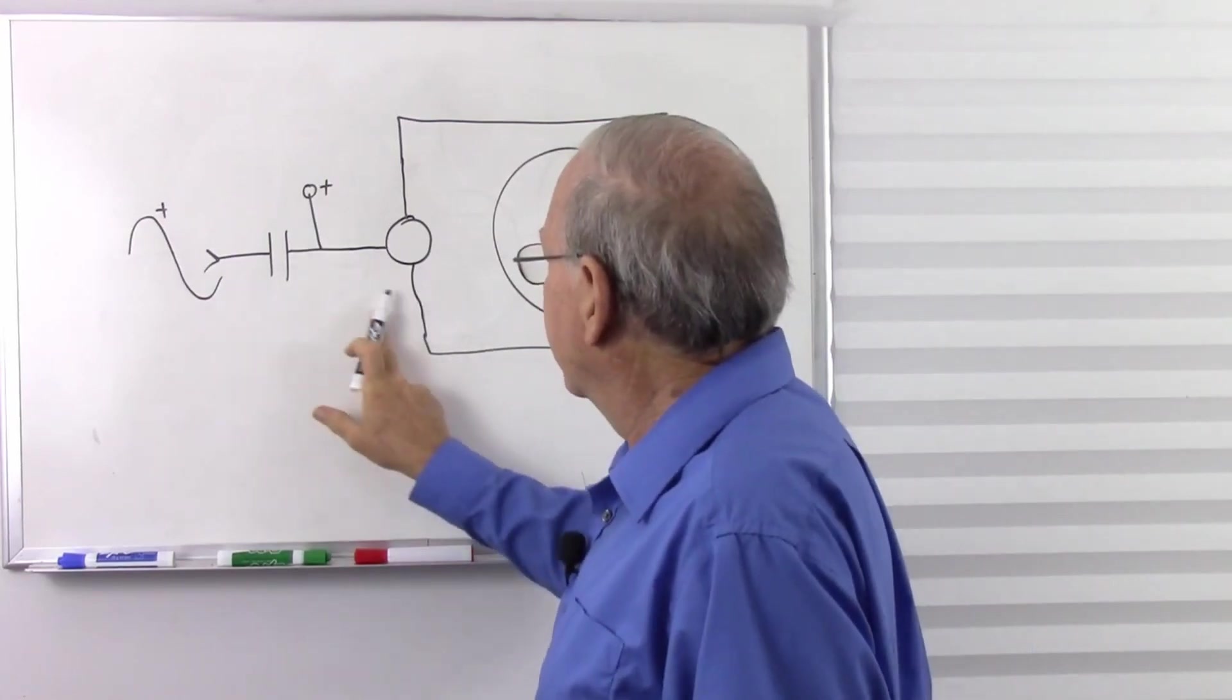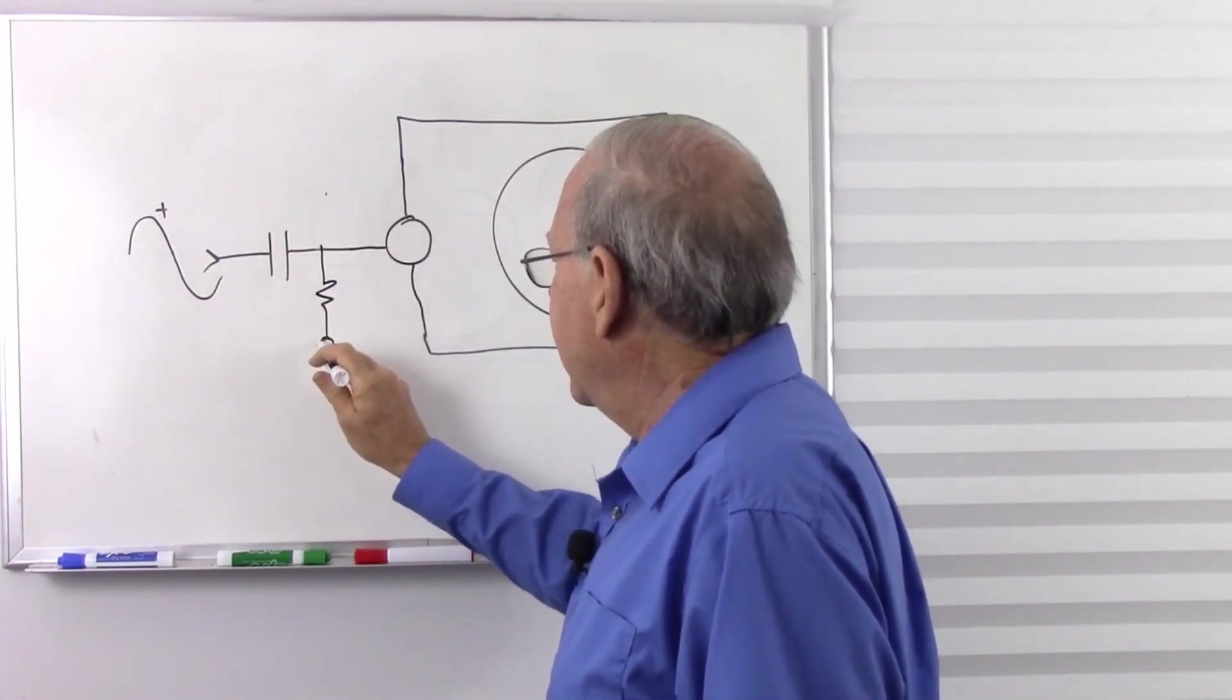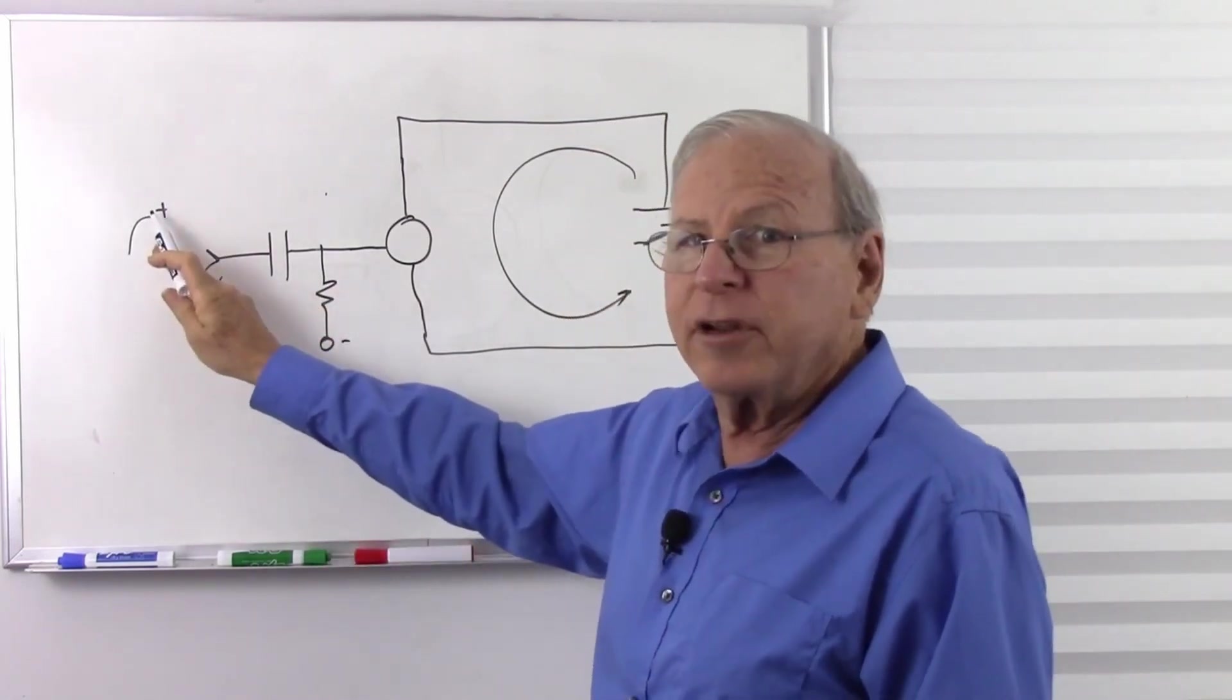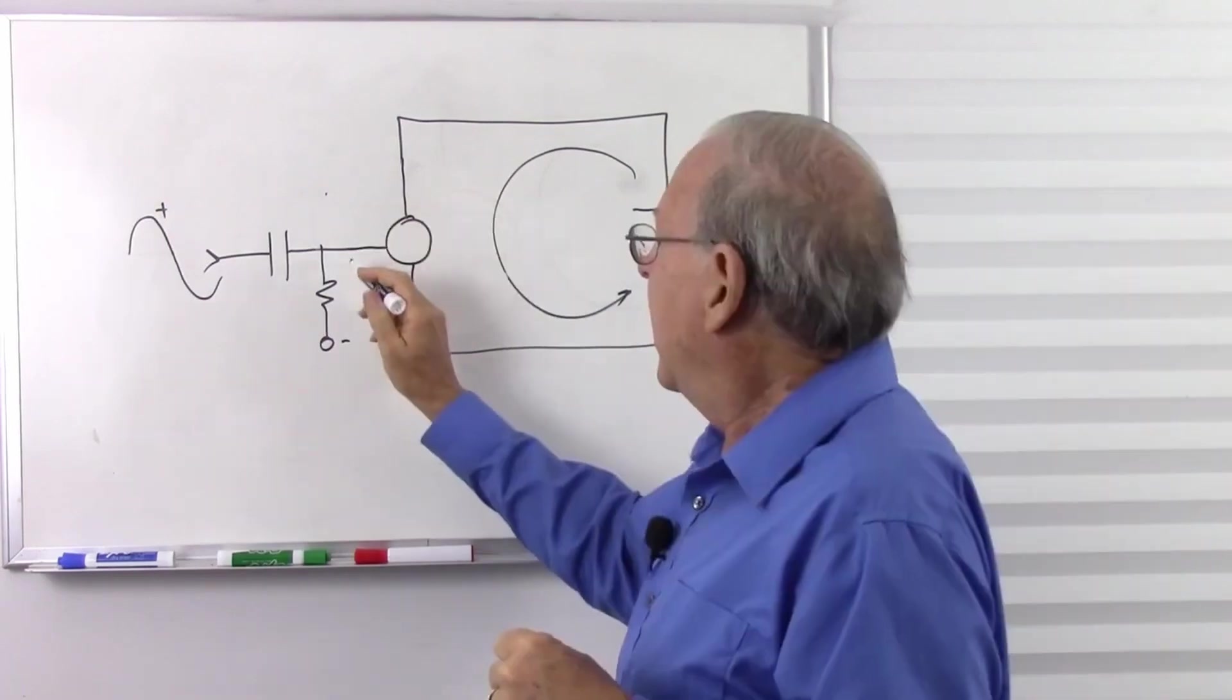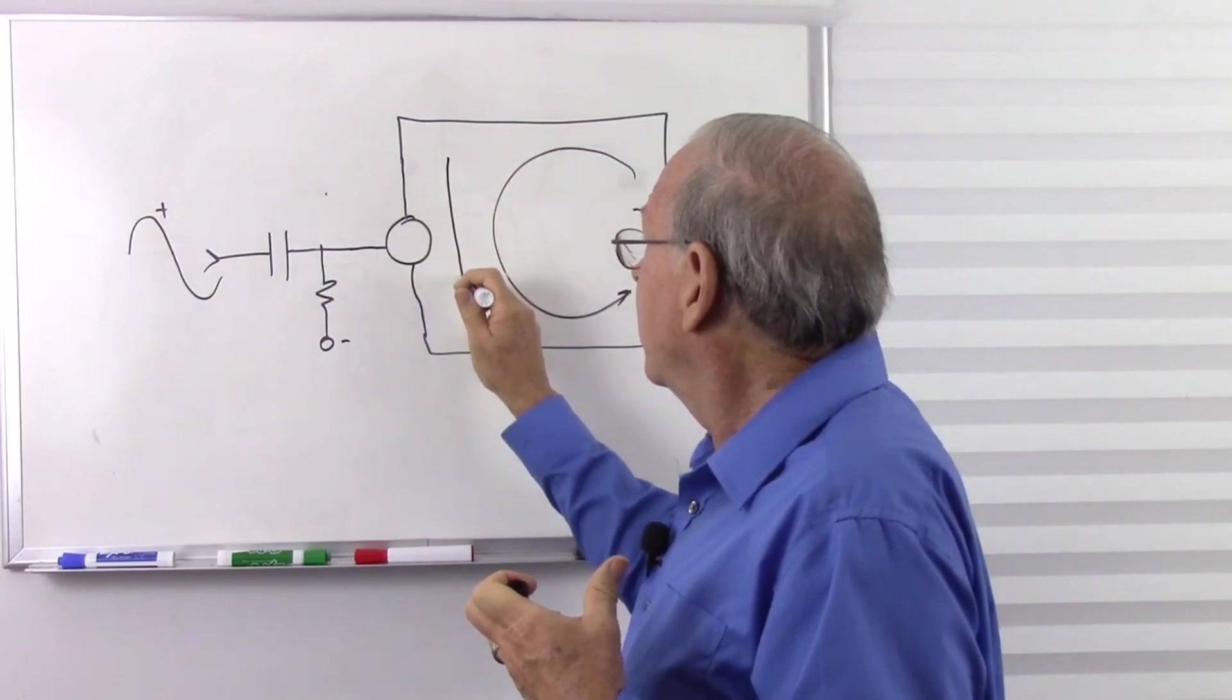And it's going to be slightly different in how it works. This is going to go to some negative voltage. And as this goes more positive, this becomes less negative. And as that positive voltage goes up, I'm going to get more current through the tube.